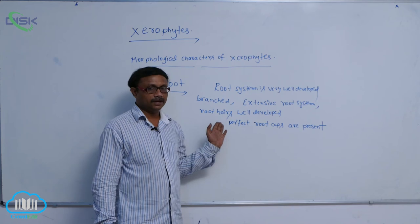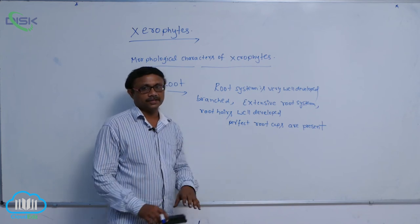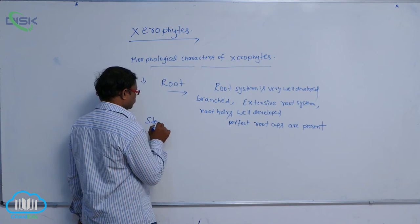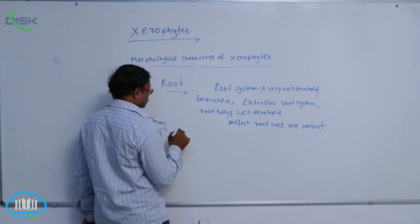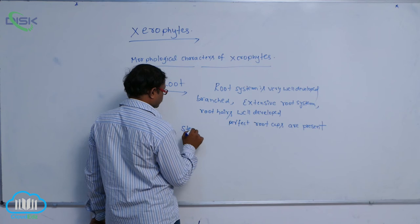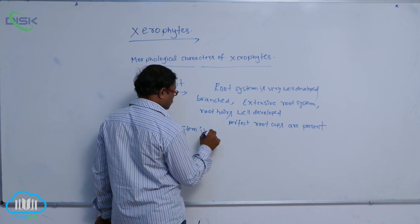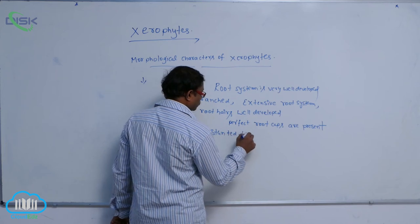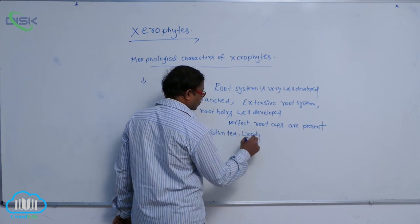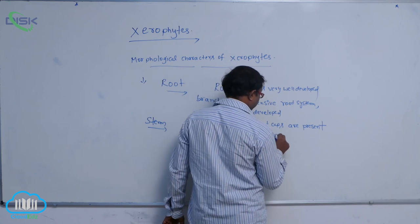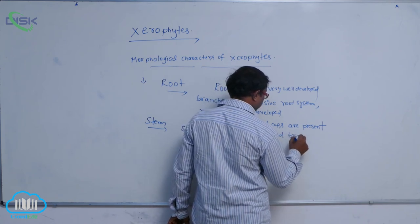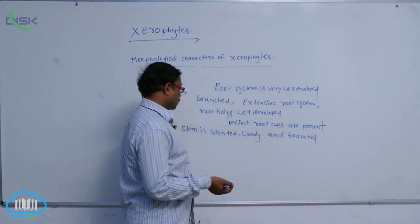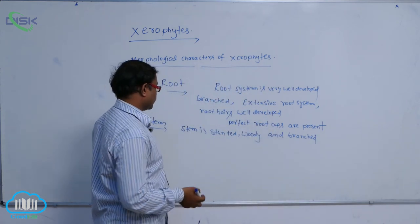The roots absorb a less amount of water from the deeper layers of the soil. After that, the stem is stunted, woody, and branched — stunted means short. The stem shows different modifications.